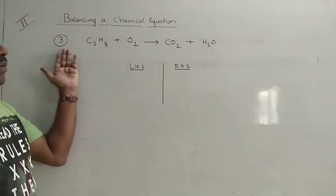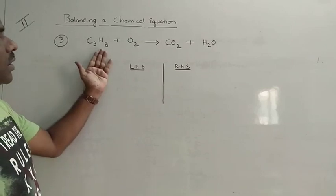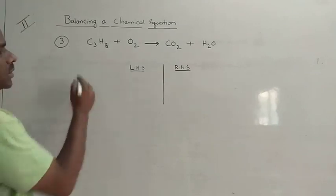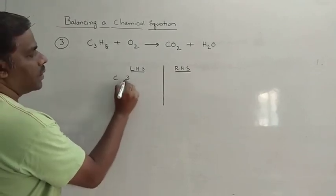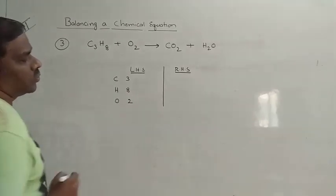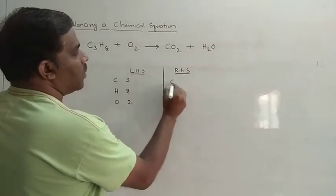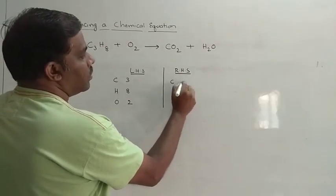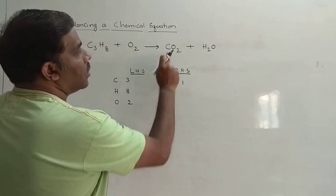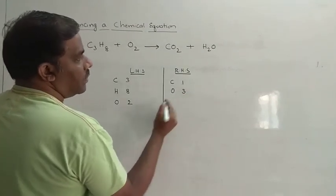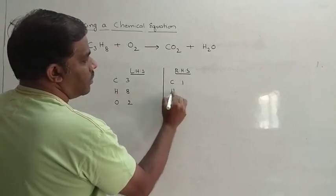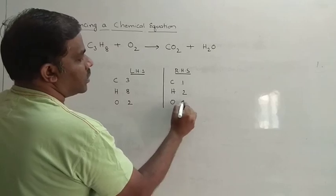Let us consider one more example, example 3: C3H8 plus O2 gives CO2 plus H2O. Let us see the elements on the left-hand side — carbon: 3, hydrogen: 8, oxygen: 2. On the right-hand side, the number of carbons are 1, oxygens are 2 plus 1, that is 3 (two from CO2, one from H2O), and the number of hydrogens are 2.